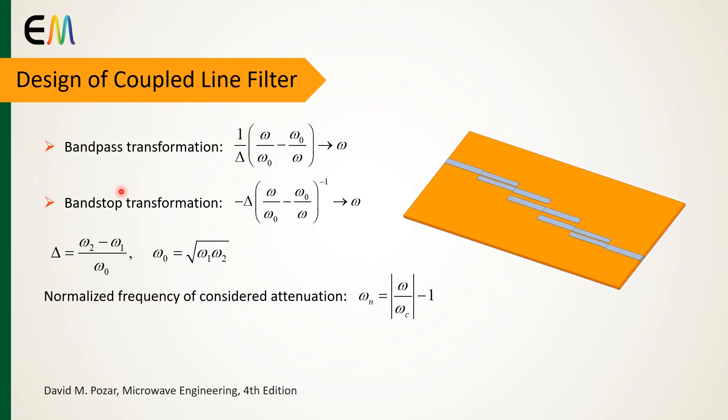The next step is to perform bandpass or bandstop transformation. Low-pass prototype filter design can be transformed to bandpass or bandstop response by these transformations. Delta is the fractional bandwidth of the passband, omega 0 is the center frequency.